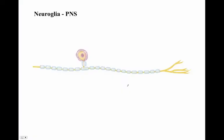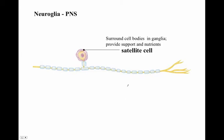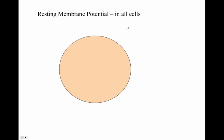Neuroglia in the peripheral nervous system include Schwann cells and satellite cells that surround cell bodies. Cell bodies are the body of the neuron. In ganglia — these groups of neurons — we need to take a look at what ganglia are.